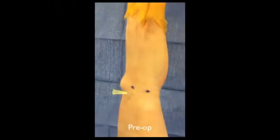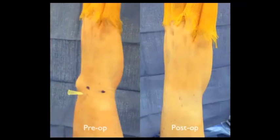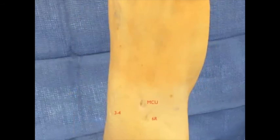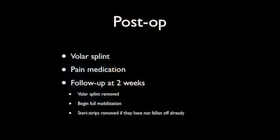At conclusion of the procedure, all port sites are closed with 4-0 monocryl in interrupted inverted deep dermal fashion. Mastisol and steri-strips are then applied. The patient is placed in a volar splint to allow the wrist to rest and any inflammation to subside. This also prevents the pumping action of joint motion, which has been suggested as a mechanism for formation of synovial cutaneous fistulae. The splint is removed at two weeks and mobilization is commenced.